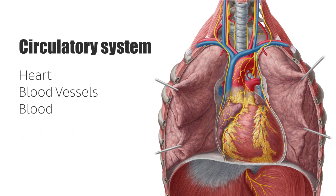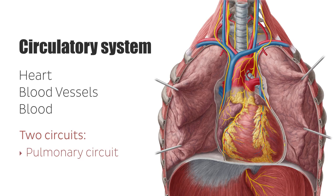It consists of two circuits that carry blood around: the smaller being the pulmonary circuit, which runs between the heart and the lungs, and the larger being the systemic circuit, which runs between the heart and the peripheral tissues.